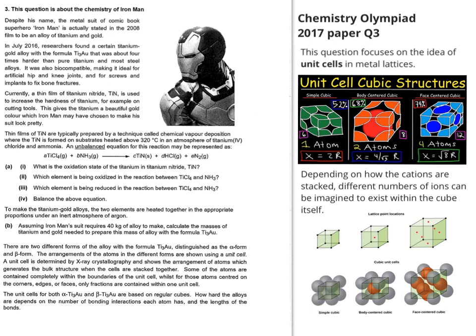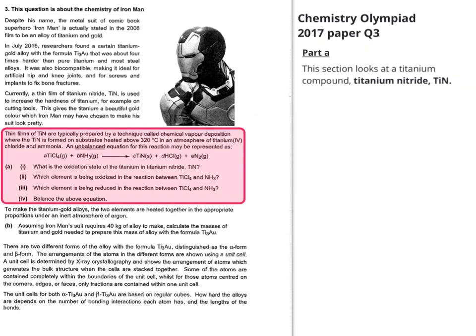I've gone through this to introduce the idea of unit cells prior to getting stuck into the question. So let's now have a look at the question itself. Part A looks at a titanium compound called titanium nitride, which is used to coat titanium cutting tools. For example, a drill that has to drill into rock has to be really hard and tough, so they might put titanium nitride coating on the steel of the drill.